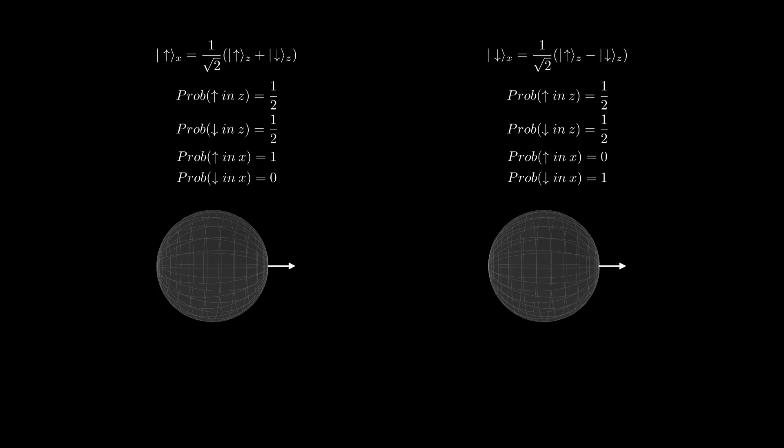Crucially, the minus sign doesn't make any difference if we're doing all the measurements in the Z direction, but it is a way of encoding information about how the state differs when the apparatus is pointing in a different orientation.